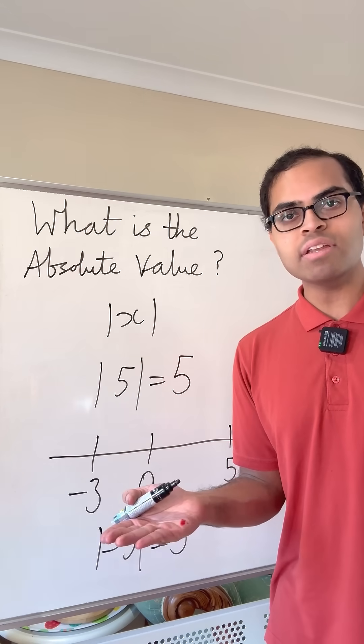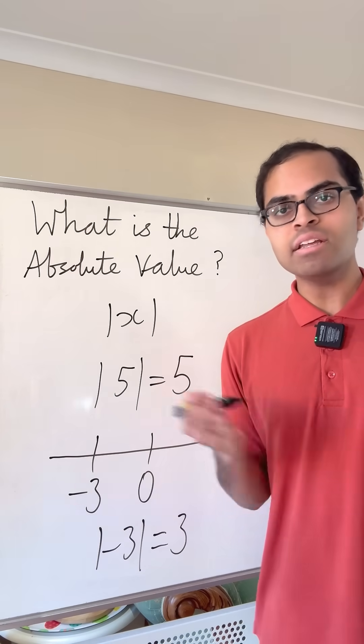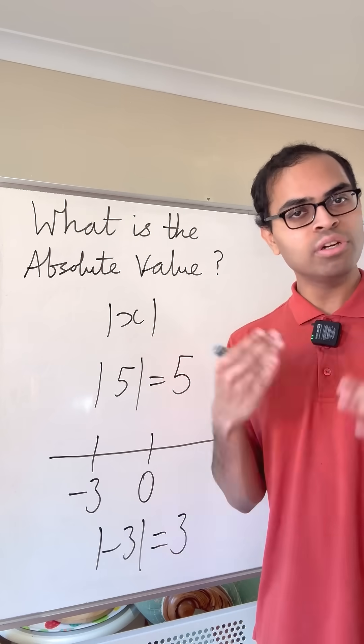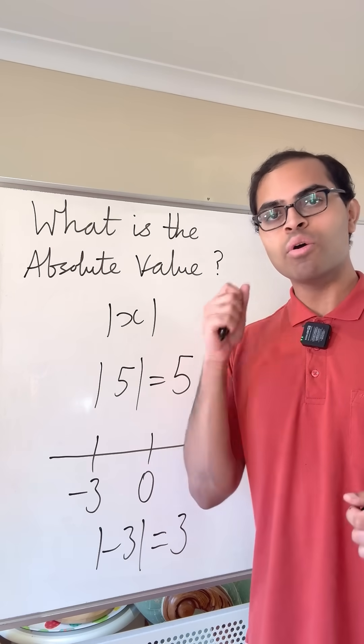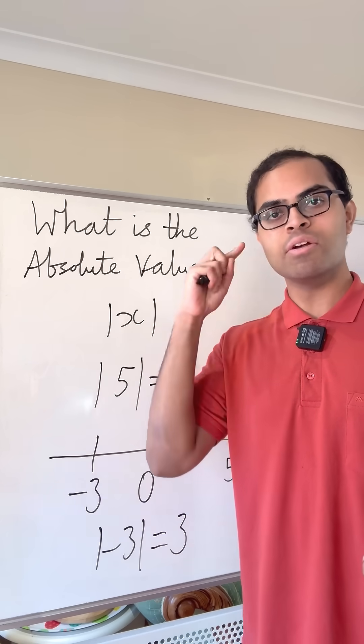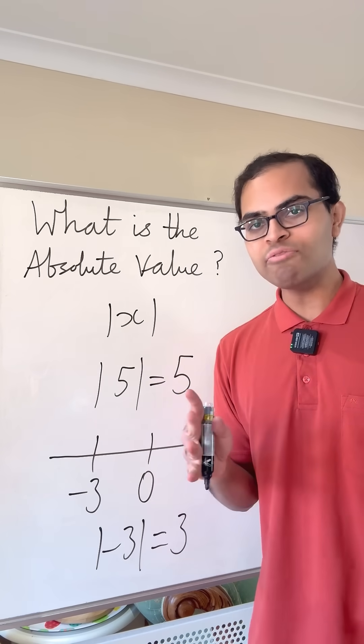Absolute value of negative seven plus seven. Absolute value of 10, 10. Absolute value of negative two, two. Just fire off. You just have to figure out what the distance is between that number and zero. That's how you think about it, not with a formula.